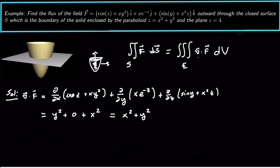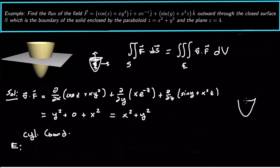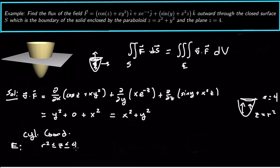Now I need to set up the triple integral over this solid region. The solid region is bounded by the paraboloid and the plane z = 4. I'm going to use cylindrical coordinates. If I look at this paraboloid, z goes from the paraboloid up to 4. In cylindrical coordinates, the paraboloid is z = r², so the bounds for z are from r² up to 4.